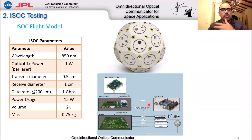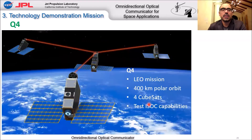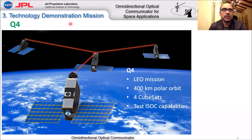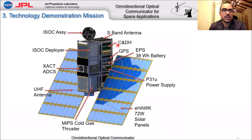Our next step is to demonstrate this capability in space. For that purpose, we are proposing a mission called Q4 consisting of four CubeSats in a LEO mission at 400 kilometers altitude. The purpose of the Q4 mission is to test the ISAC capabilities. In this arrangement, there is a CubeSat in the middle called the leader and two CubeSats around it called the followers. This shows the Q4 CubeSat with the avionics components we have selected.